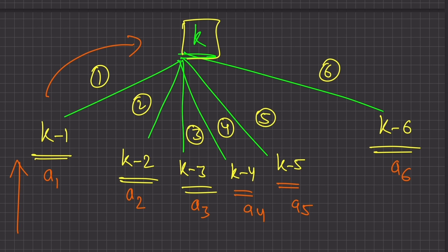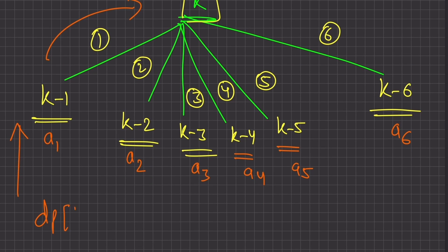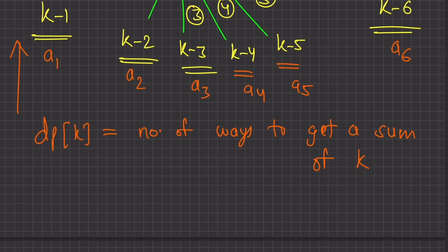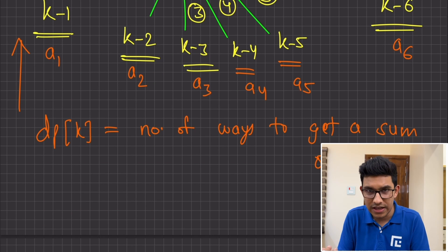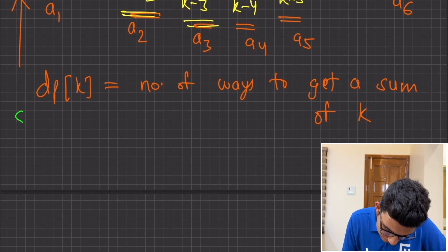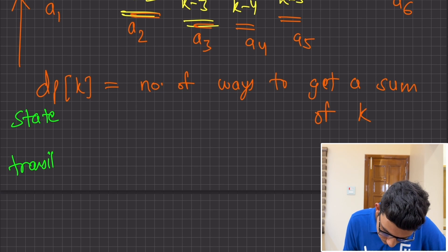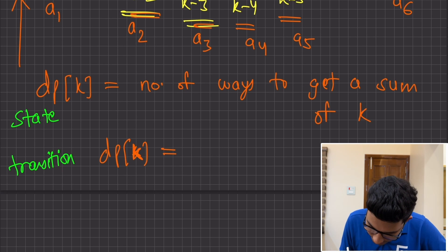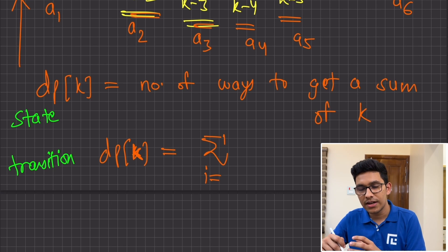Since k is a big problem and we've broken it down into smaller sub-problems k minus 1 through k minus 6, we can think of a state. A state is nothing but a sub-problem in this entire problem. We can define our state like this: dp of k is equal to the number of ways to get a sum of k starting from 0. And what is going to be dp of k? It is the addition of all the ways of k minus 1, k minus 2, so on up till k minus 6. The transition is: dp of k equals the sum of dp of k minus i, for i from 1 to 6.